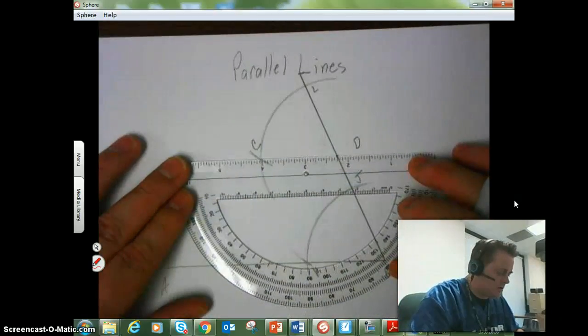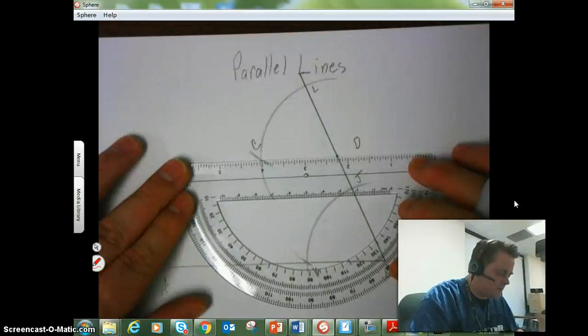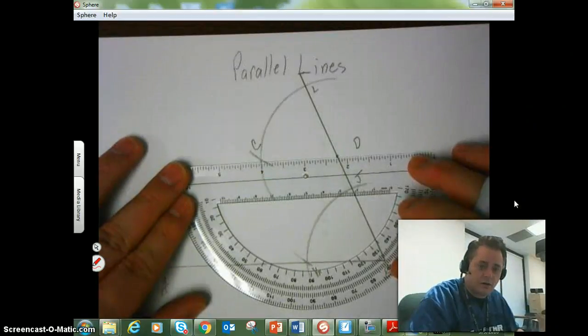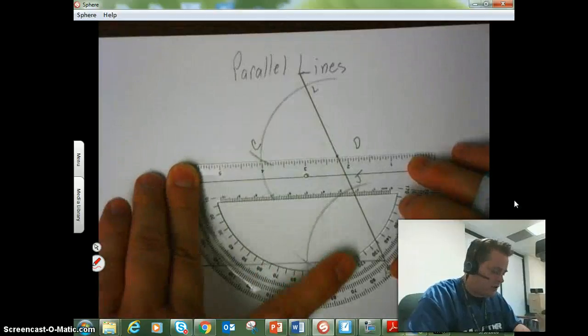So what I'm going to do is take my straight edge here and I'm going to line it up with points C and D. And there, that looks pretty okay to me.